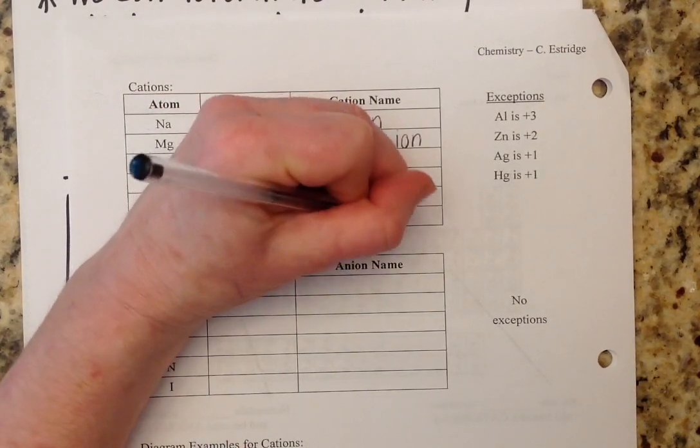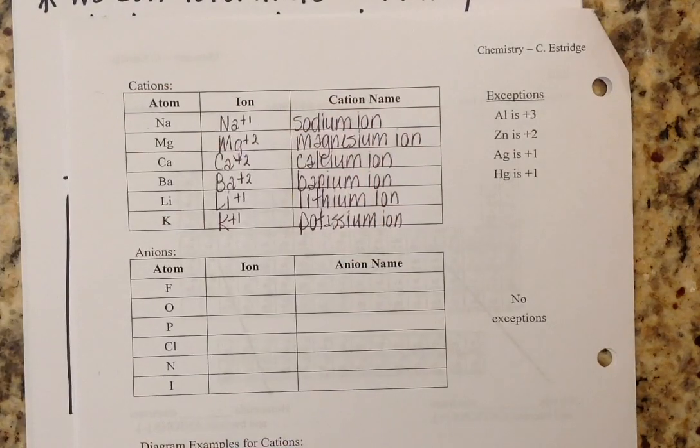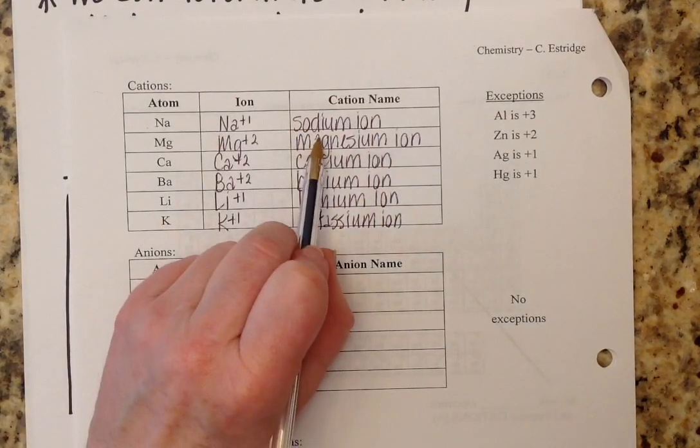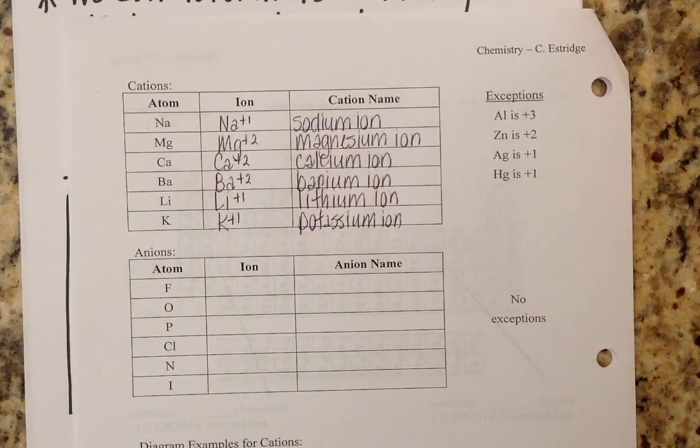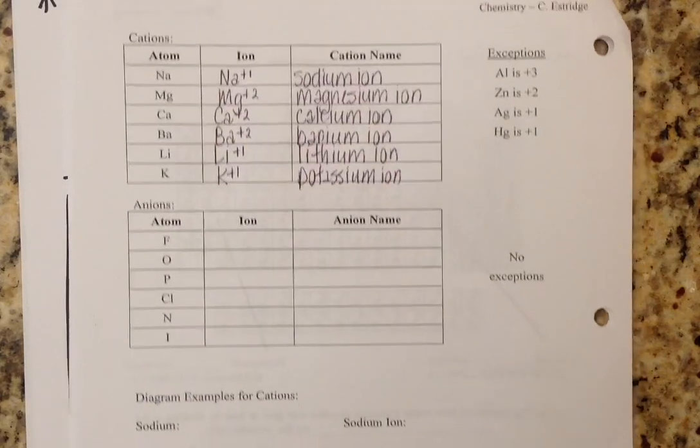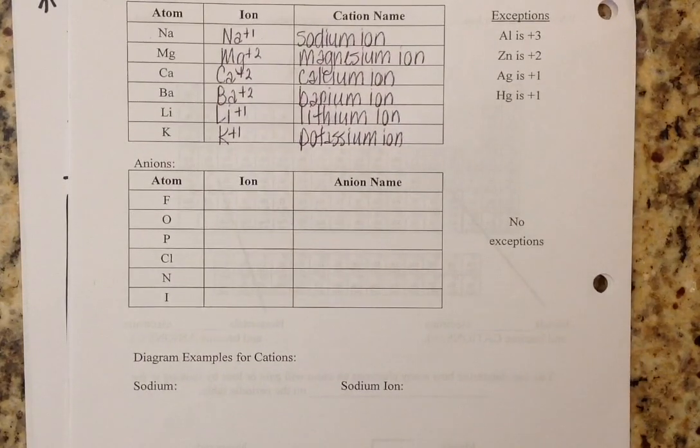So basically, when a metal loses electrons, it becomes positively charged. We just say the name of the metal. Don't change the ending. And we add the word ion to the end. Now, anions are a little bit different. And this is going to make a whole lot more sense when you actually start writing and naming your ionic compounds.